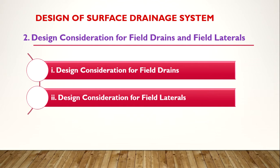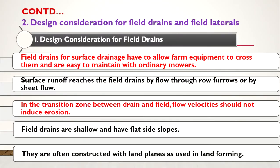This second step has two components: design consideration for field drains and design consideration for field laterals. Field drains are the smaller channels constructed inside the land. Water from all these channels is collected and given to the field laterals. Many laterals will be there, and all the water from the laterals is collected to the main channel. Field drains are the smaller ones and field laterals are the bigger ones.